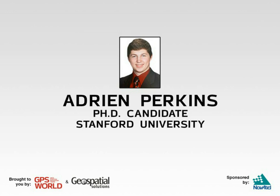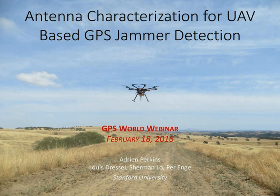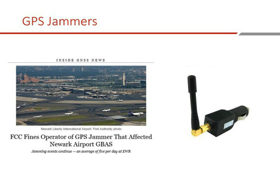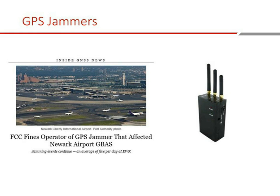Thank you, Alan. Today I'm going to talk about antenna characterization for UAV-based GPS jammer detection and localization. To motivate the problem, we look at a jamming event at Newark Airport caused by passing traffic with very localized GPS jammers. The problem illustrates what can happen with jammers a bit bigger than what sits in your cigarette lighter — something a couple miles down the runway on approach can wreak havoc on incoming traffic and pose a security concern for commercial aviation airports.